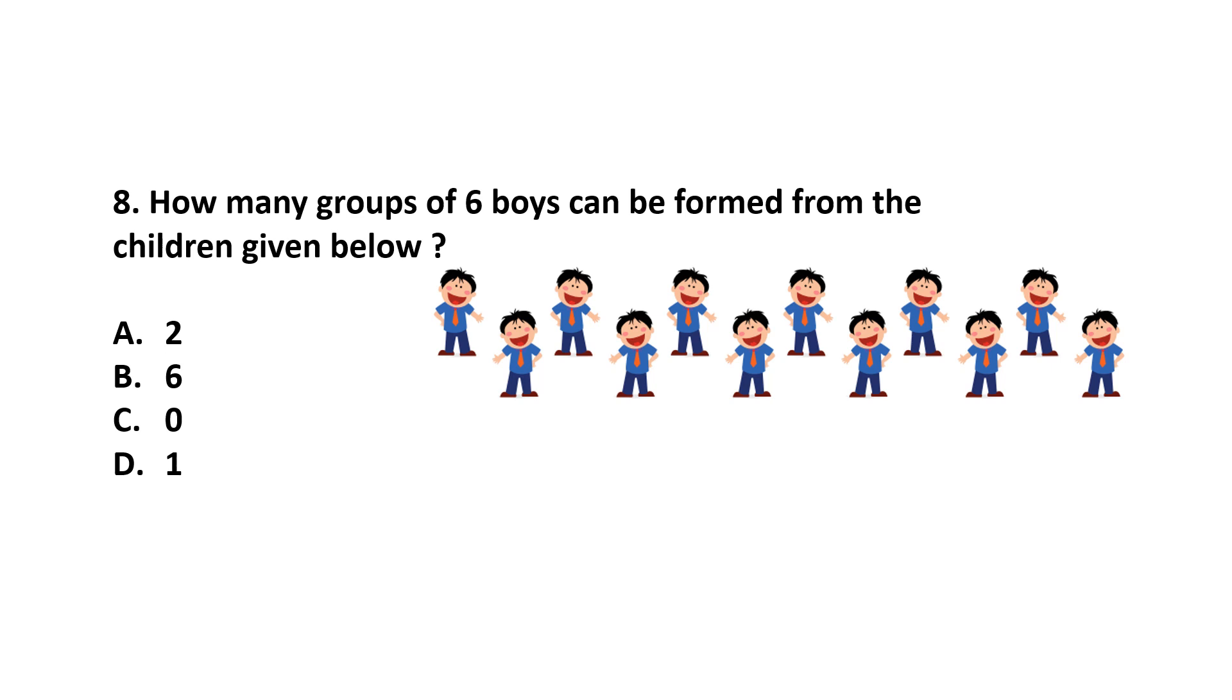Question number 8. How many groups of 6 boys can be formed from the given children below? We can make 1 and 2. 2 groups of 6 boys each. Answer is option A.